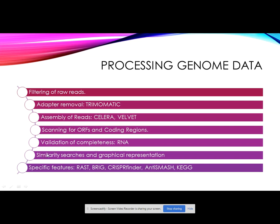Researchers may then proceed to similarity searches and comparative genomics. Two genomes can be compared using BLAST, BLAST2GO, or any comparative genomics tool to identify similarities between genomes. Special features can be identified using RAST (Rapid Annotation using Subsystem Technology), CRISPR Finder to identify CRISPR elements, antiSMASH to identify antibiotic resistance clusters, and KEGG or KAAS to identify specific pathways.